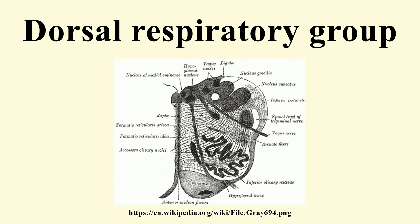When the cells stop firing, the inspiratory muscles relax, inspiration ceases, and exhalation begins. The rhythm of the DRG produces a respiratory rate of 12 to 16 breaths per minute in humans. Inspiration usually lasts approximately 2 seconds, and expiration lasts about 3 seconds. The normal inspiration rate and rhythm is called eupnea, and difficult respiration is termed dyspnea.